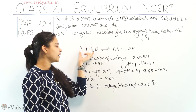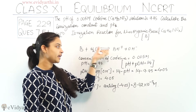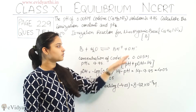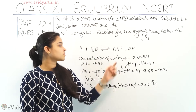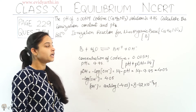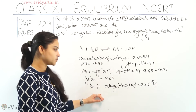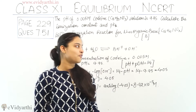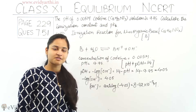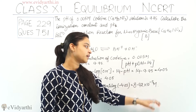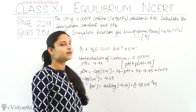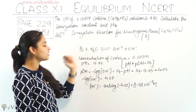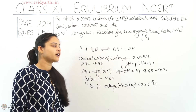Since the base is completely ionized into BH⁺ and OH⁻, the concentration of OH⁻ ion that comes from this will be the same as the concentration of BH⁺ ion. So if OH⁻ ion concentration is 8.92 into 10 raise to power minus 5 molar, then BH⁺ ion concentration is also 8.92 into 10 raise to power minus 5 molar. And the concentration of the base is already known, that is 0.005 molar.